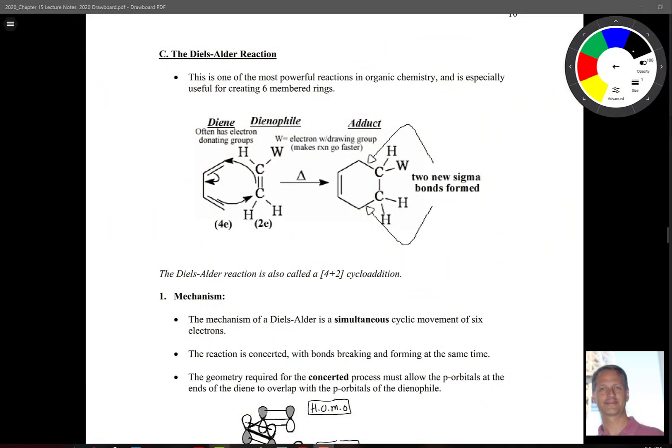The Diels-Alder reaction is very interesting in the sense that you form rings, mostly 6-membered rings. They're often used in things like steroid synthesis, for example.